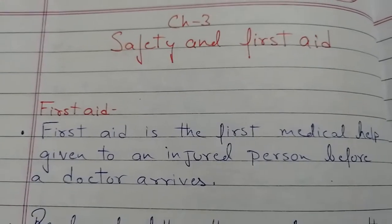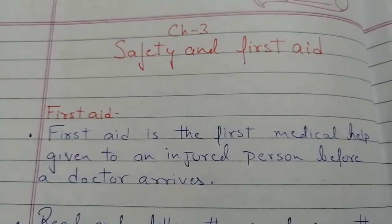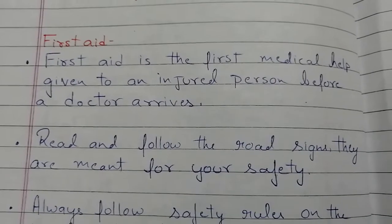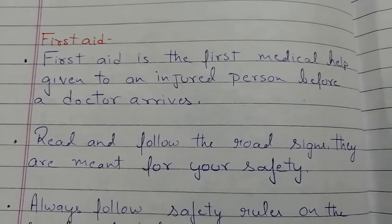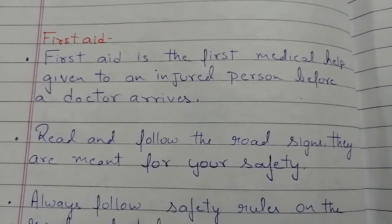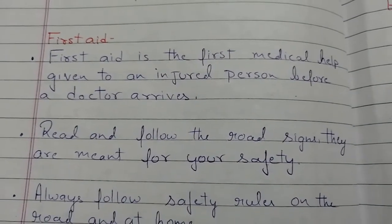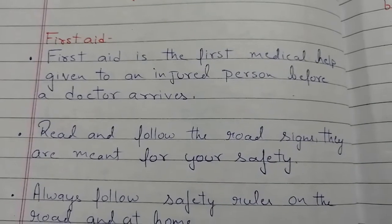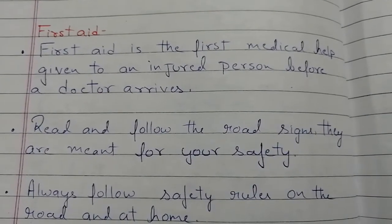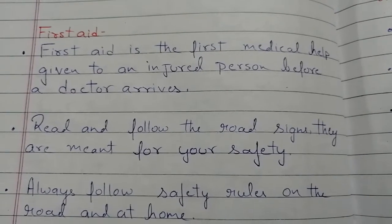Starting with the explanation part: Safety and First Aid, Chapter 3. The first topic is first aid. First aid is the first medical help given to an injured person before a doctor arrives. If something happens in your home or anywhere in front of you, before you can call a doctor, you should do something at that time — that is first aid.